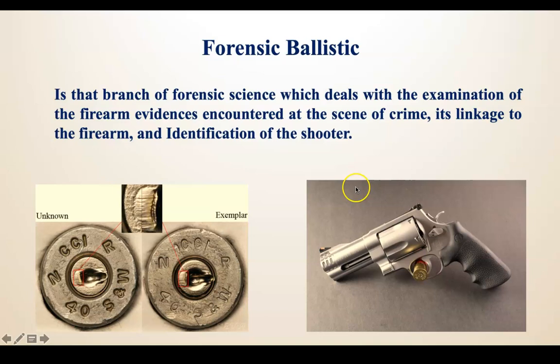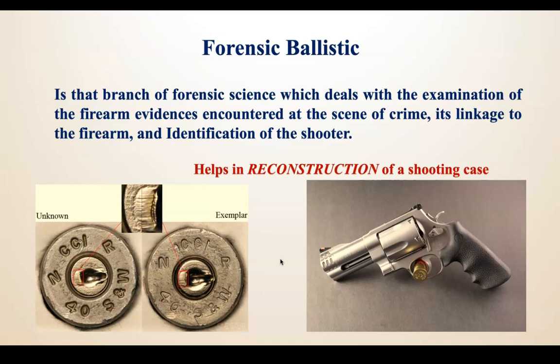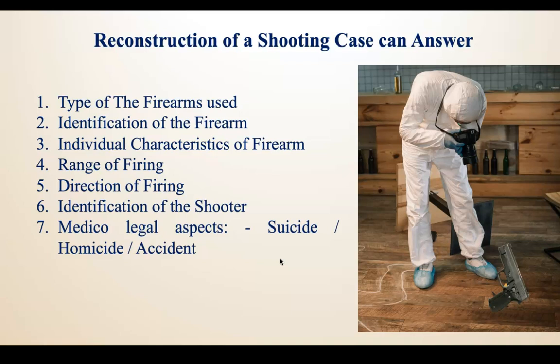The evidence can be a firearm which may or may not be at the crime scene, an unused cartridge, a fired cartridge case, or a projectile found outside or inside the body or target. Forensic ballistics also helps in the reconstruction of a shooting case.